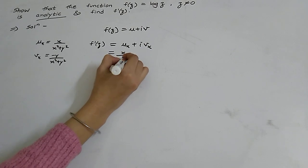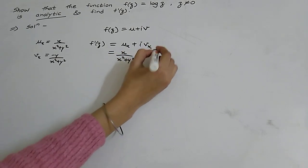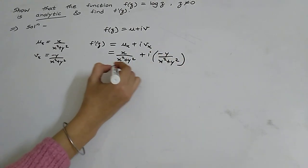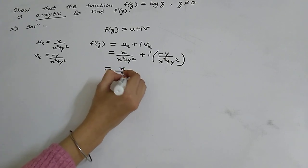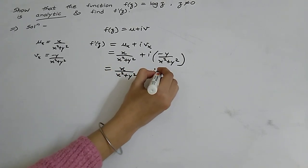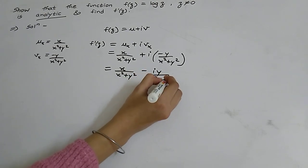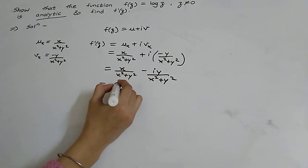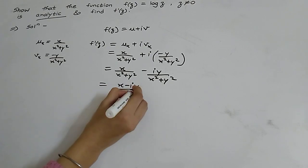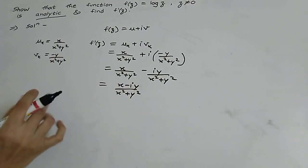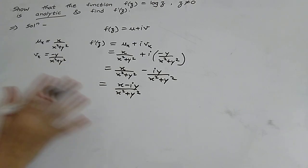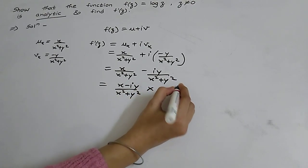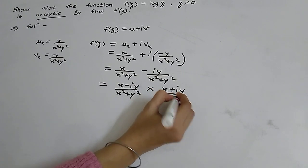Now for f'(z), using f'(z) = u_x + i·v_x, we get x/(x²+y²) + i·(-y/(x²+y²)), which equals x/(x²+y²) - i·y/(x²+y²). Since the denominator is the same, we write this as (x - iy)/(x²+y²). We do not want i in the numerator, so we multiply by (x + iy)/(x + iy).